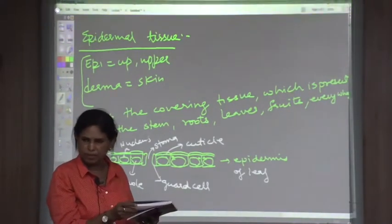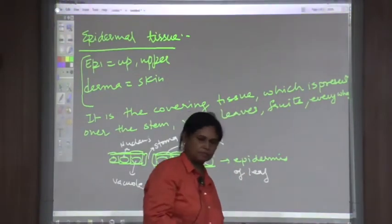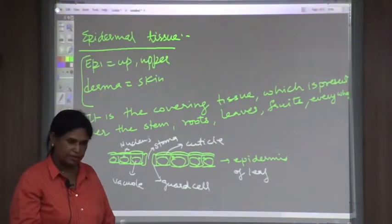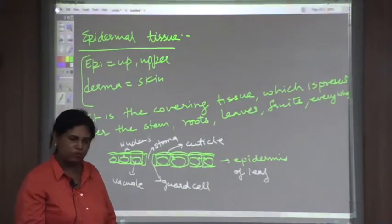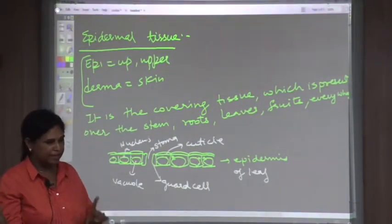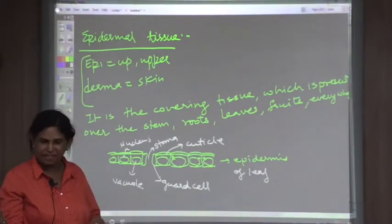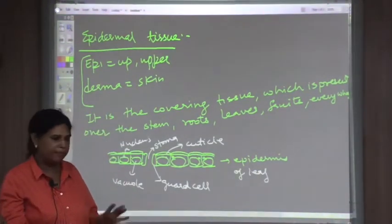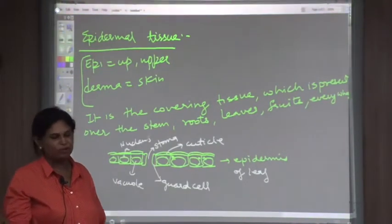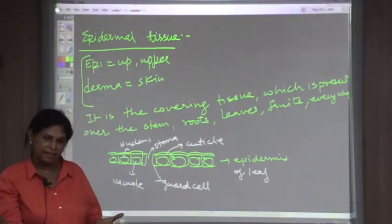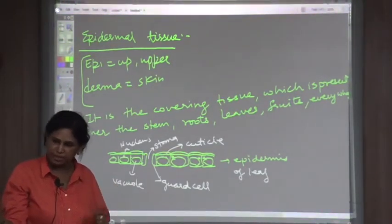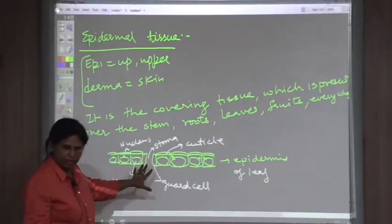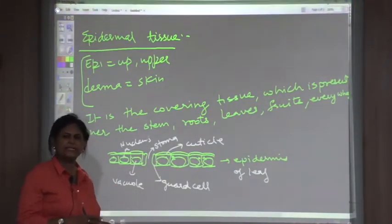In a dicot leaf, more stomata are present on the lower epidermis because it is not directly exposed to the sun. But in a monocot leaf, stomata are present in equal numbers on both upper and lower sides because the leaf is equally exposed on both sides — like grass or maize leaves, which are oriented vertically. Dicot leaves are almost parallel to the earth's surface, so the upper epidermis is more exposed to sun and has fewer stomata. Stoma is singular and stomata is the plural form.